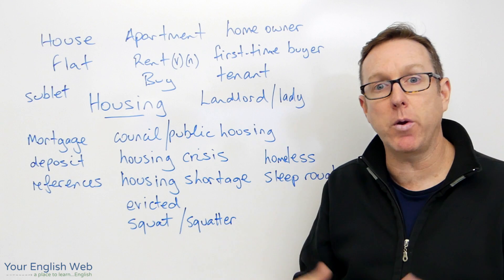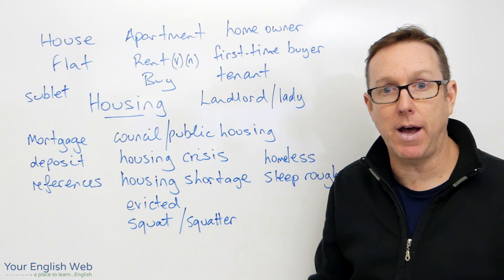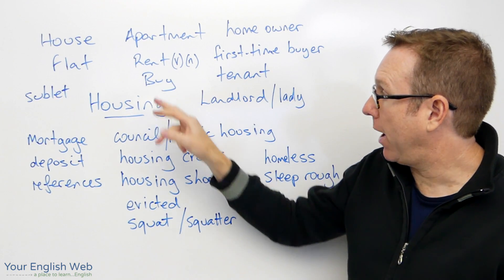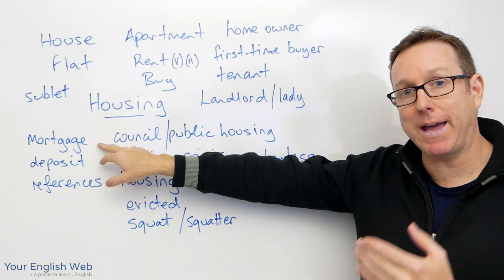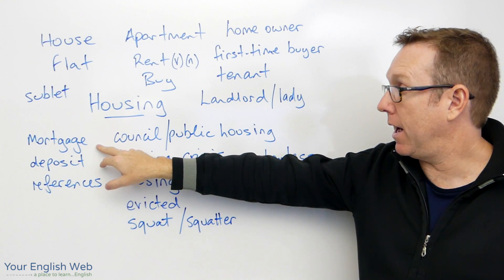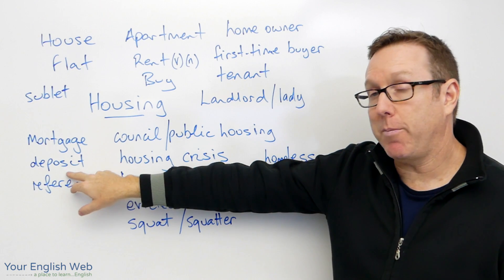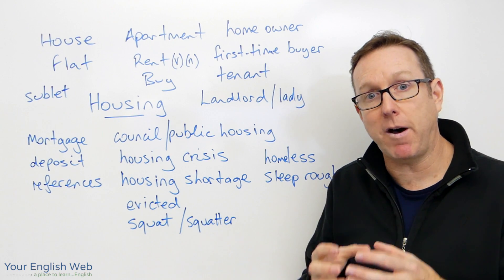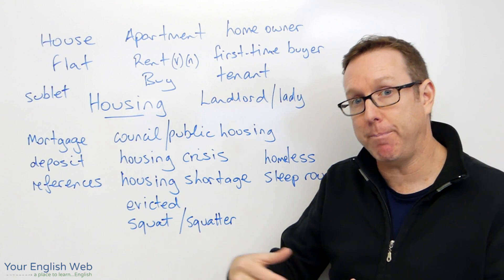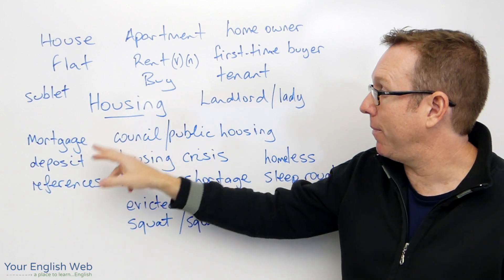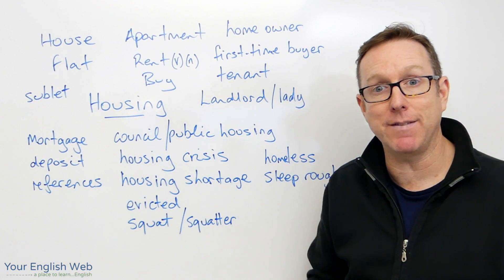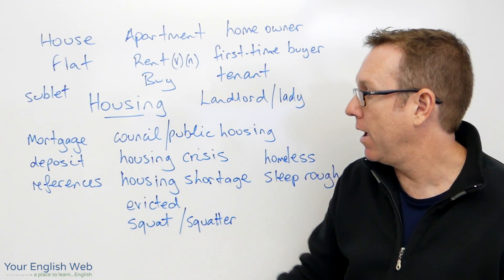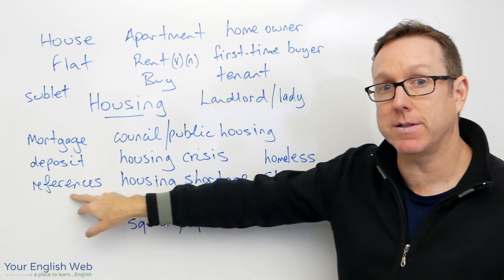We pay rent every month, week, or fortnight — whatever your agreement is. If we buy, we most likely need to go to the bank and get a mortgage. For the mortgage we might need a deposit — a sum of money to help us buy the house. If we rent, we might also need to leave two or three months' rent as a deposit.